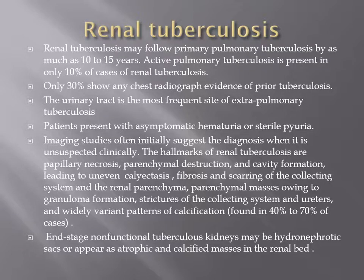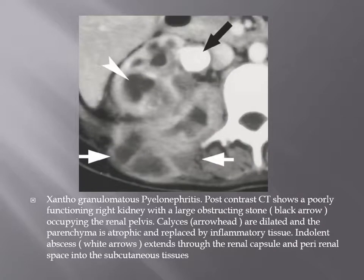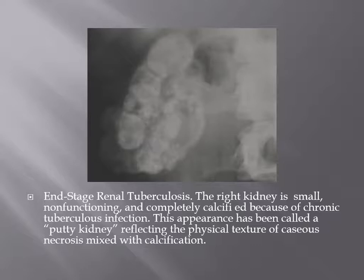Renal tuberculosis occurs in patients with a history of previous infection; 30% show abnormal chest radiograph from prior tuberculosis. It is the most common site of extra-thoracic TB, occurring in only 10% of active TB cases. Most cases show no evidence of thoracic TB. The kidney can be destroyed, calcified, irregular, and non-functioning. A case shows end-stage renal tuberculosis with a calcified, non-functioning kidney.